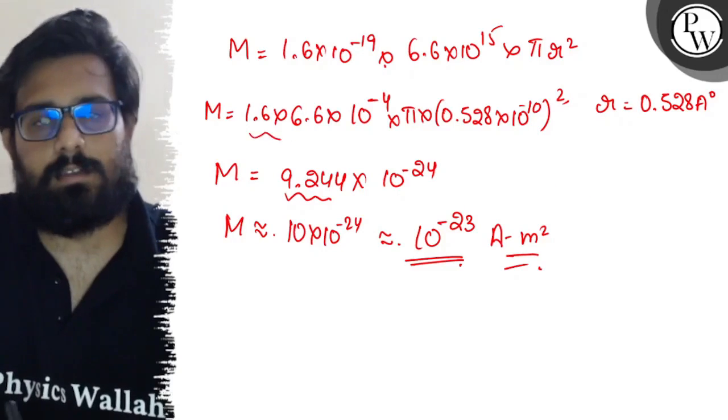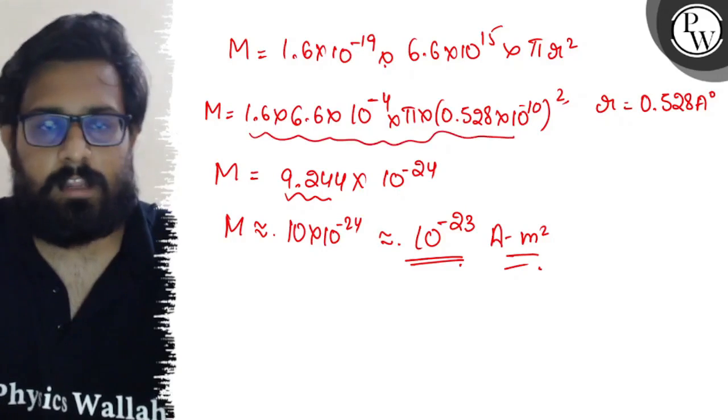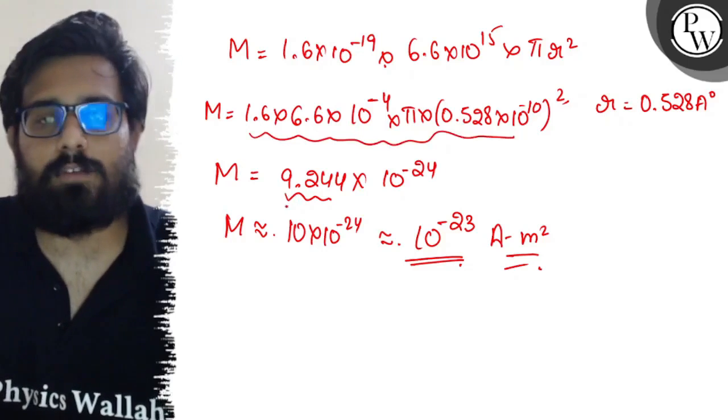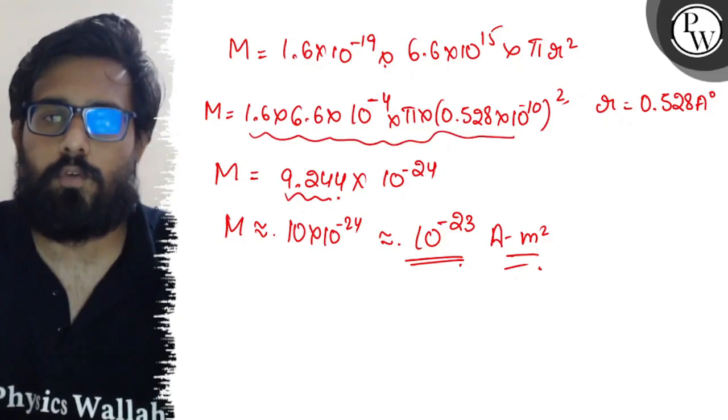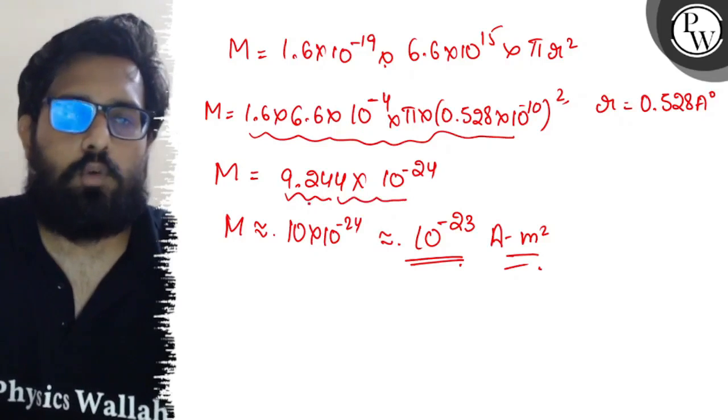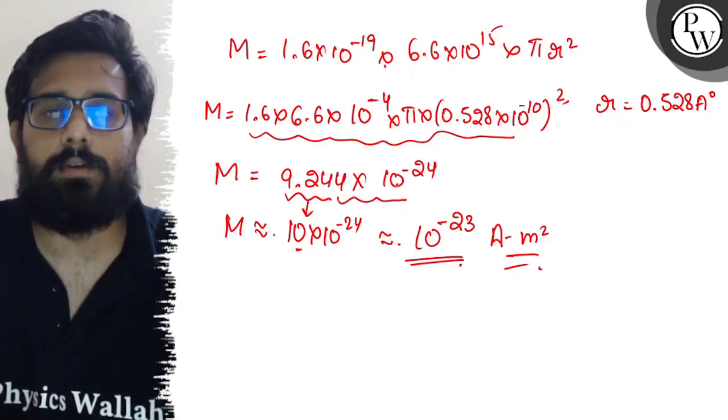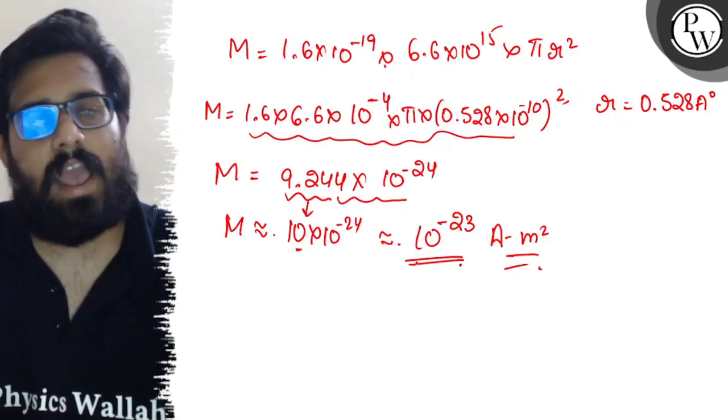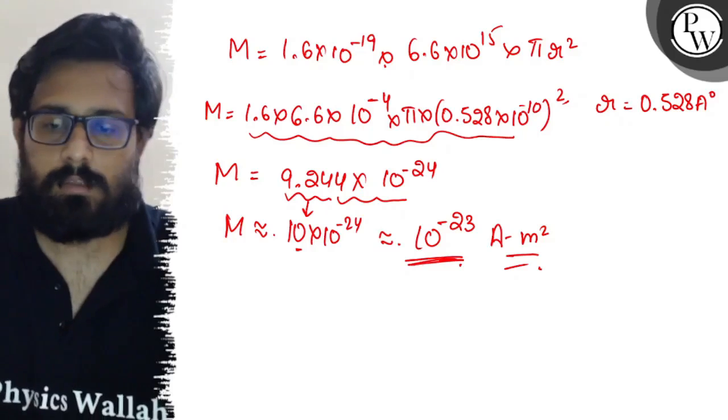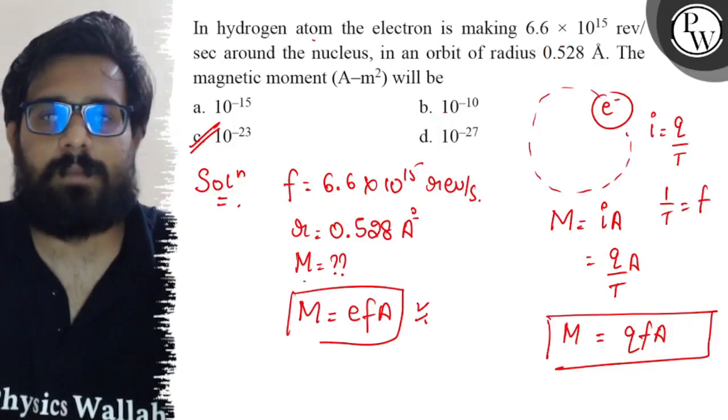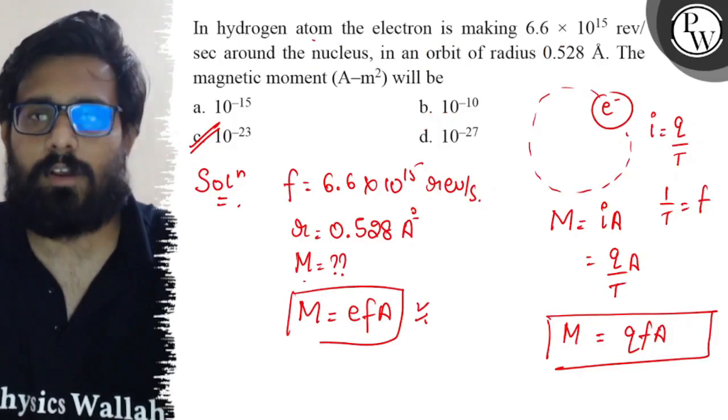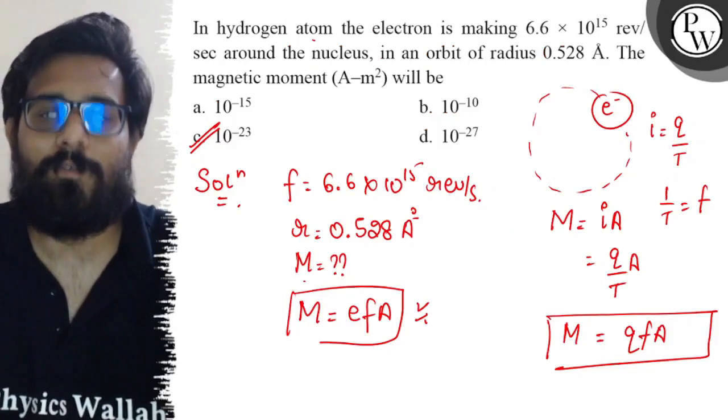The calculation is definitely lengthy, but when you solve this part, you will get a value of 9.244 × 10^-24, or approximately 10 × 10^-24, which is actually 10^-23 ampere meter square. So this is your magnetic moment. Hence, option C is absolutely correct. I hope you got the concept of this question. All the very best.